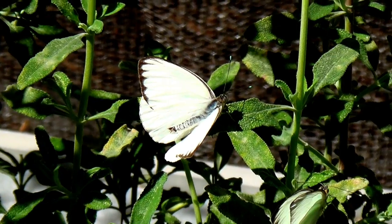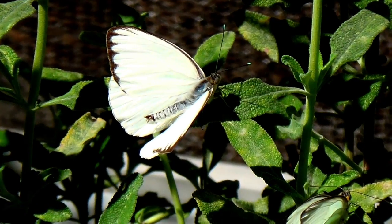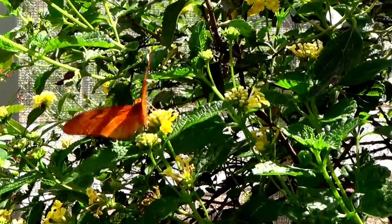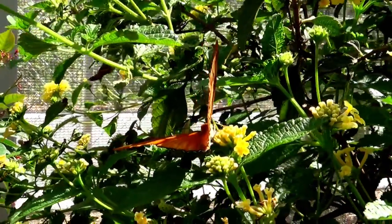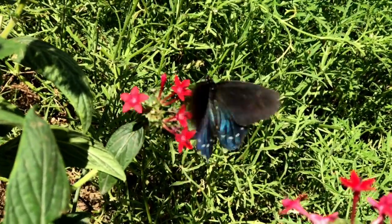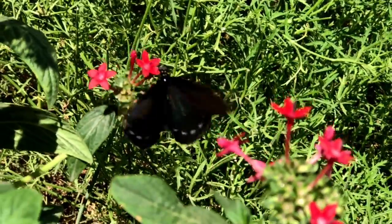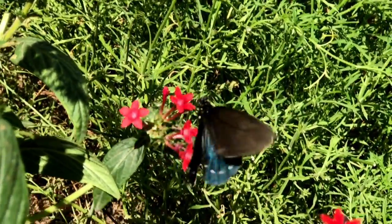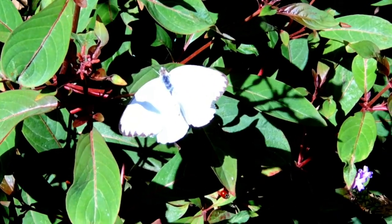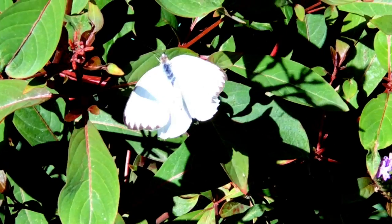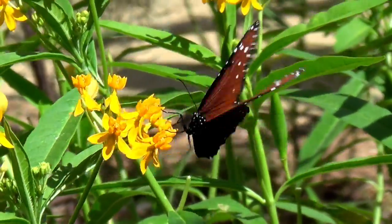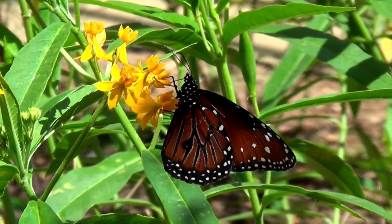Scientists estimate there are between 15,000 to 20,000 different species of butterflies and they also come in different colors. Butterflies often have brightly colored wings with a pattern made of tiny scales.